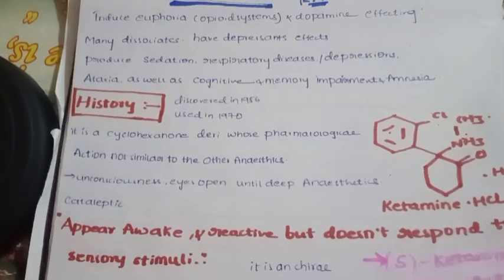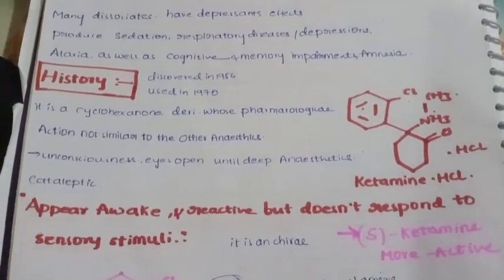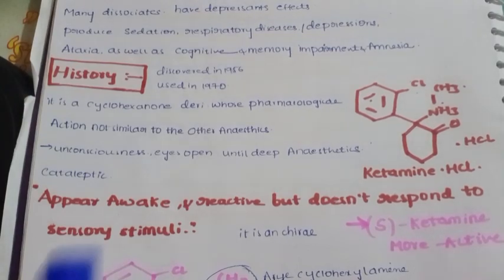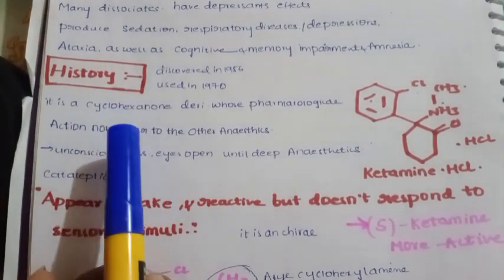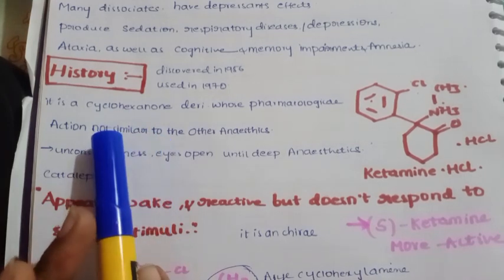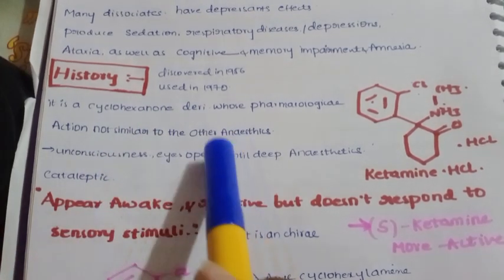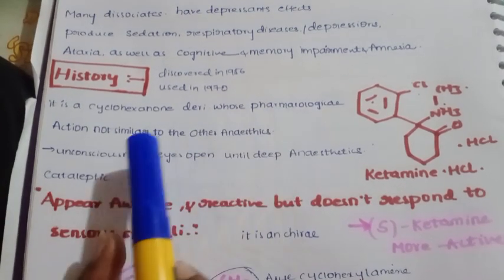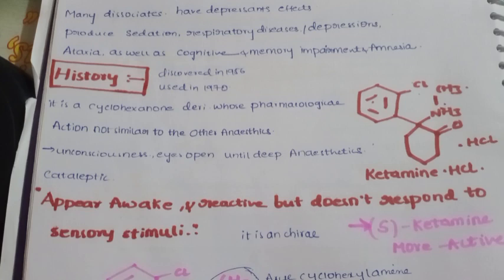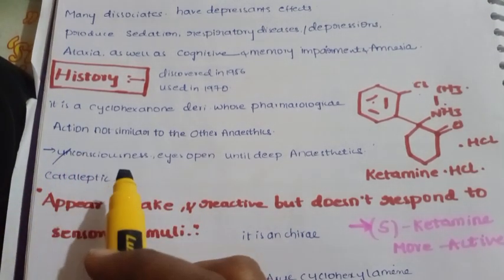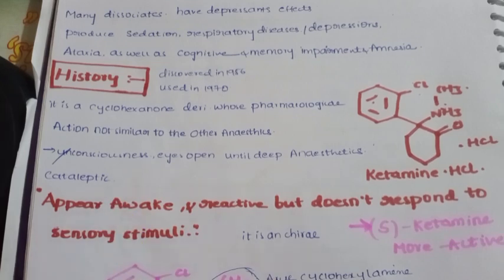We have to explain the structure in terms of medicinal chemistry. It is a cyclohexanone — cyclo indicates the ring saturation, a closed structure with 6 carbons, and the other part is a ketone. These are derivatives whose pharmacological action is not similar to other anesthetics. Ketamine's anesthetic activity is completely different — here there is no unconsciousness; the person is conscious with eyes open, yet feels a state of deep anesthesia.